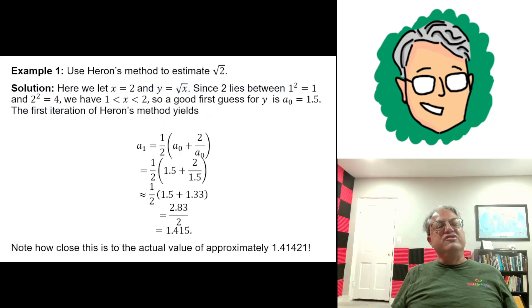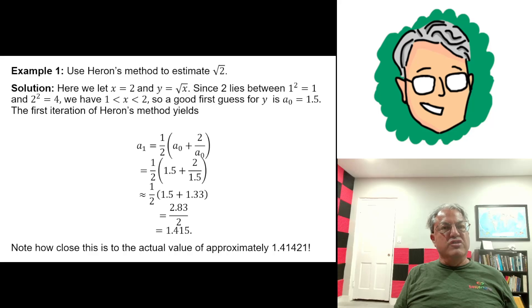Let's start with an easy example. How about the square root of two? A lot of you might already know the square root of two is about 1.4, but let's pretend we didn't know that. We know that two lies between the squares of one and two. The square of one is one, and the square of two is four. So the square root of two has to lie between one and two. A good initial guess might be 1.5. Just split the difference.